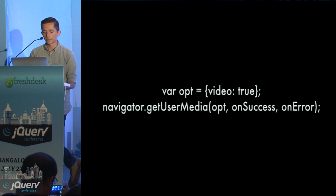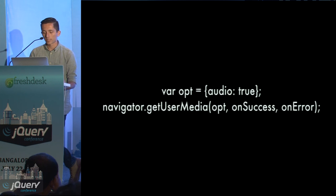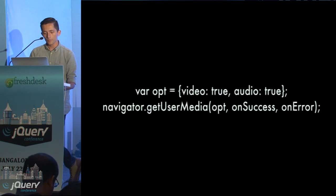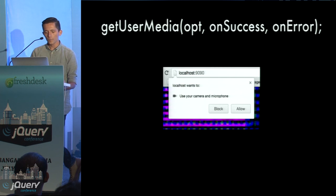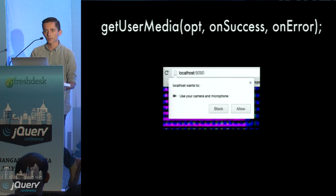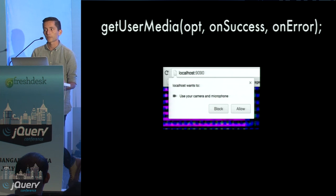Using getUserMedia, you specify which streams you need. In one example, we're saying we just want the video by using 'video: true'. In another, we're saying we just want the microphone — 'audio: true'. Requesting both is obvious: 'audio: true, video: true'. getUserMedia is governed by the same permissions model as geolocation, which means it prompts the user to allow access when you call the function. The user can select which camera or microphone they want to use.